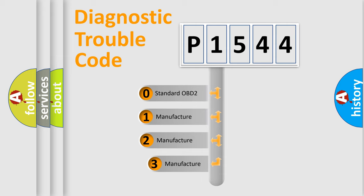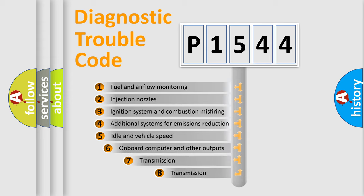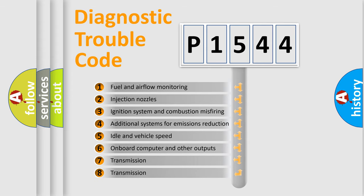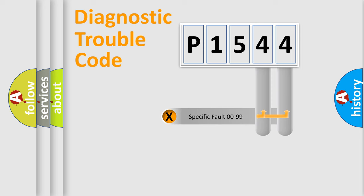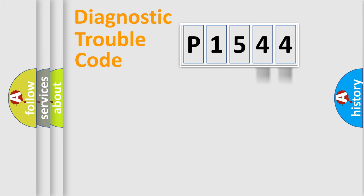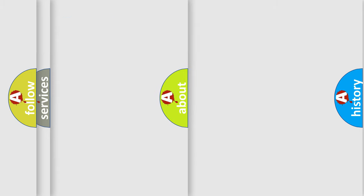If the second character is expressed as zero, it is a standardized error. In the case of numbers 1, 2, or 3, it is a more specific expression of a car-specific error. The third character specifies a subset of errors. This division is valid only for the standardized DTC code, and only if the second character is expressed by the number zero.